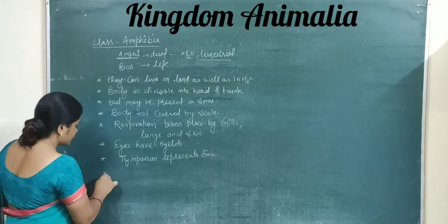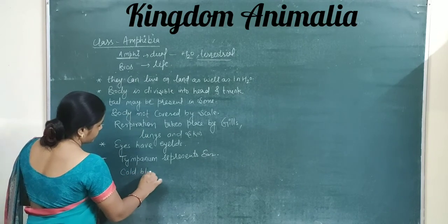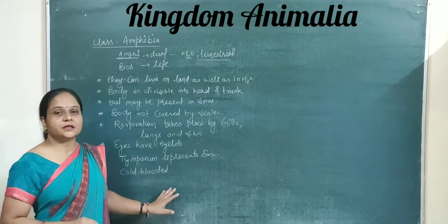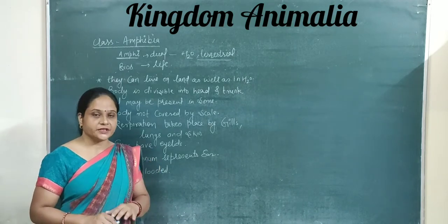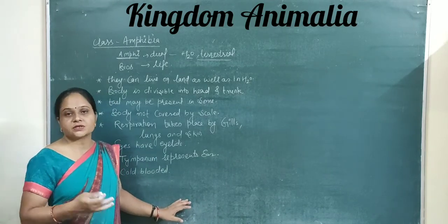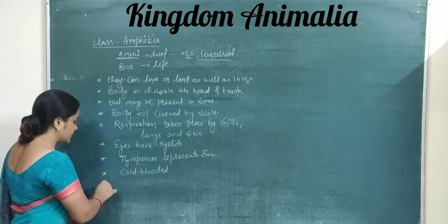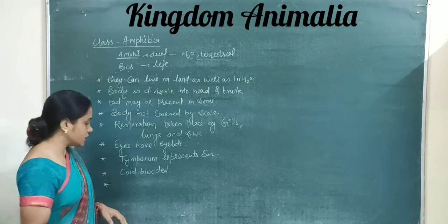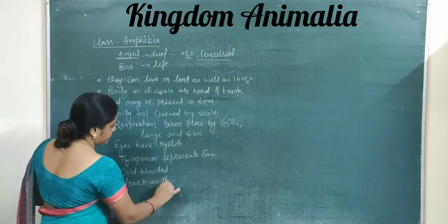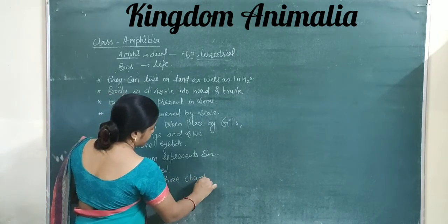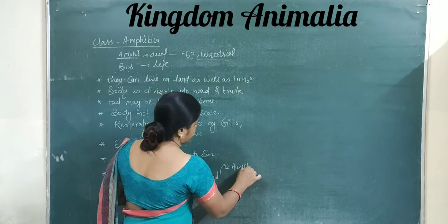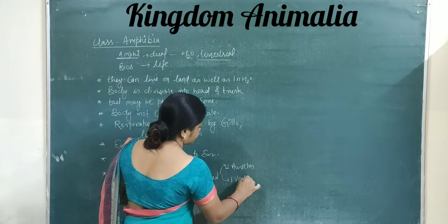The next feature is that these are cold-blooded organisms. They cannot maintain their body temperature; the body temperature changes with the weather condition — as the climate changes, their body temperature continuously changes, so there is no constant body temperature. The heart is three-chambered, with two auricles and one ventricle.